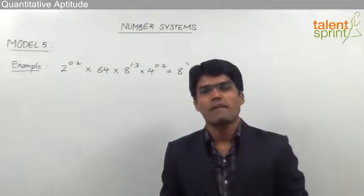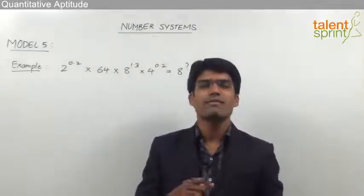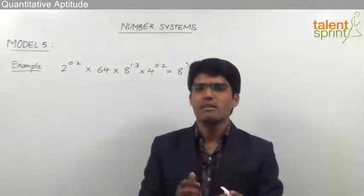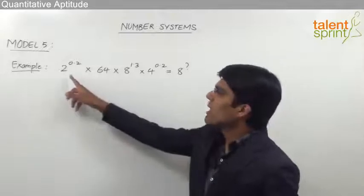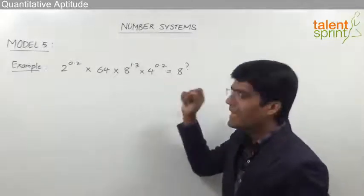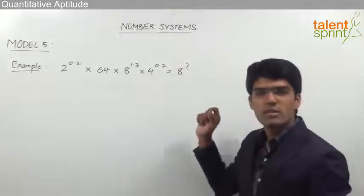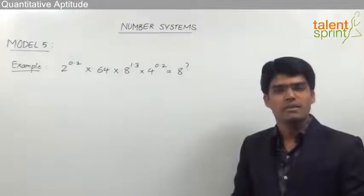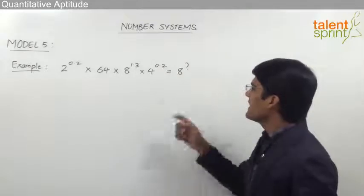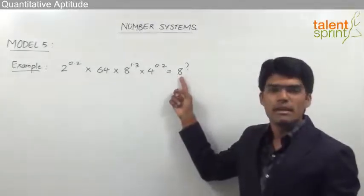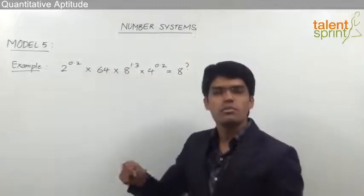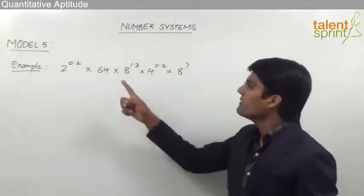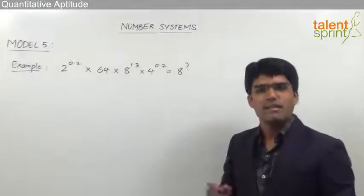So those are the various laws of exponents or indices. Let us now take an example from model 5 of number systems to solve a question related to exponents using the rules we have learned. The question is: 2 power 0.2 into 64 into 8 power 1.3 into 4 power 0.2 is equal to 8 power question mark. We need to find what comes in place of the question mark. Since the base on the right-hand side is 8, all bases on the left-hand side should be made equal to 8.